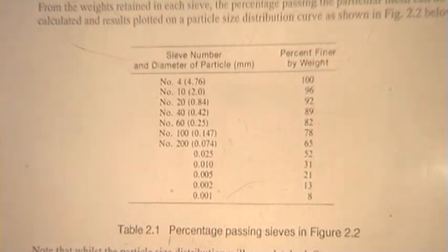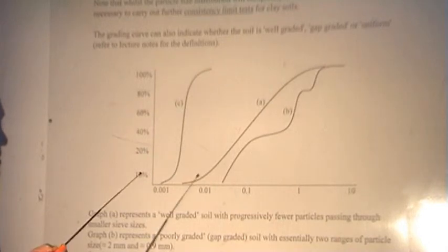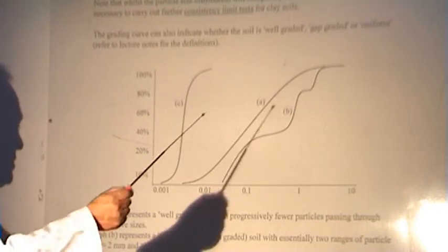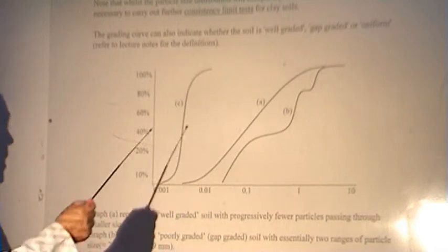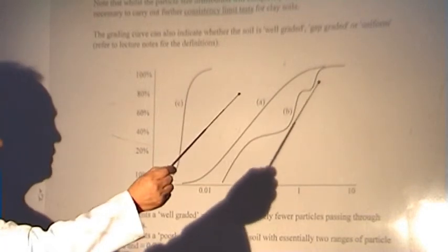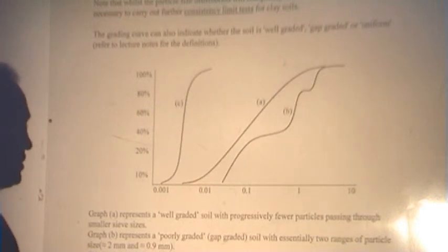Once we have the particle size distribution curve, we can assess the likely soil type by looking at the shape of the curve. A gradually falling slope indicates a well-graded soil. A curve that is approximately vertical indicates a poorly graded uniform soil, and one that has plateaus or steps indicates a poorly graded, gap-graded soil with a deficiency of some soil sizes.